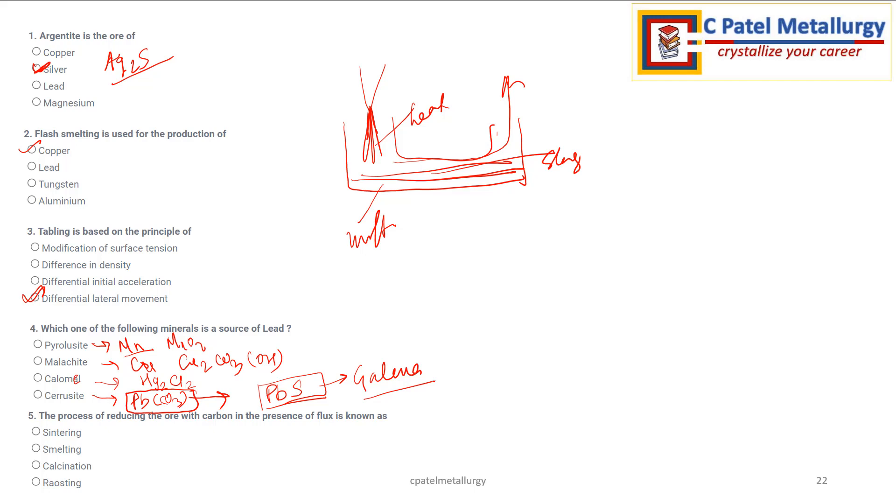The process of reducing the ore with carbon in the presence of flux is known as. When we do the reduction with the help of carbon in the presence of flux, then it is basically called as smelting.